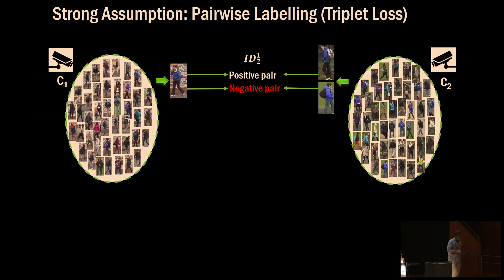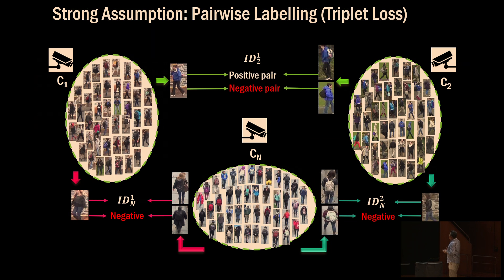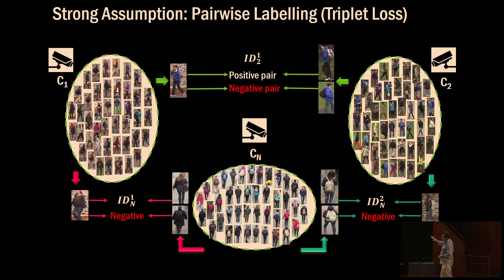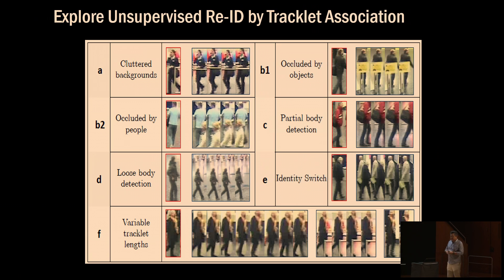In person re-identification, supervised learning makes very strong assumptions. We need pairwise labeling, and one of the strongest current models uses triplet loss, which also requires pairwise labeling. That means in each scene, for each camera, you manually label positive and negative pairs against another camera, and you need to do that exhaustively for all cameras. This imposes a huge constraint. In natural environments, not many people reappear in other cameras, so the amount of data you can collect for exhaustive cross-camera labeling is very limited.